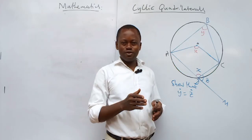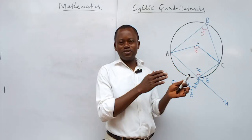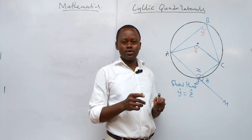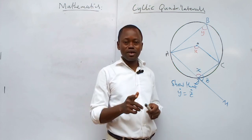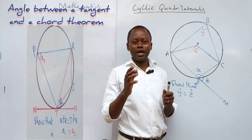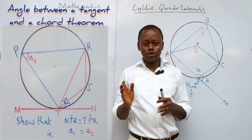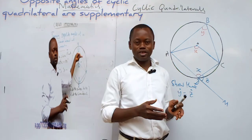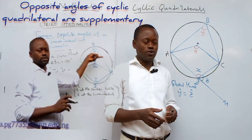An exterior angle of a cyclic quadrilateral is equal to the opposite interior angle. Remember, before now we've done several theorems, and we have already started doing some calculations using those theorems.